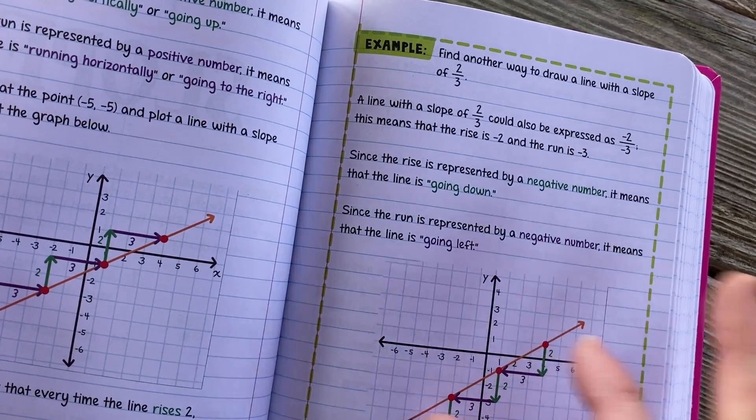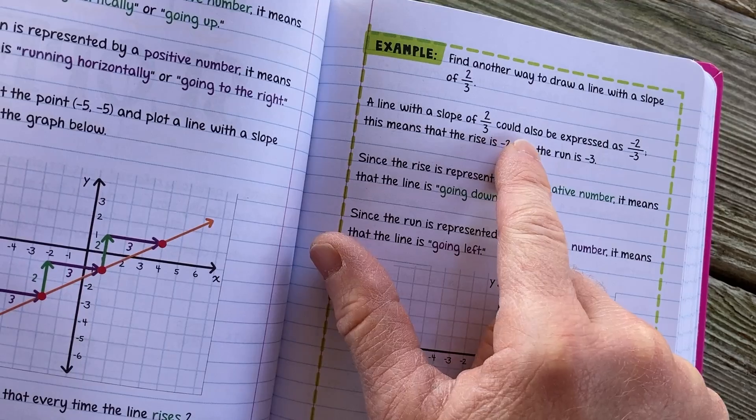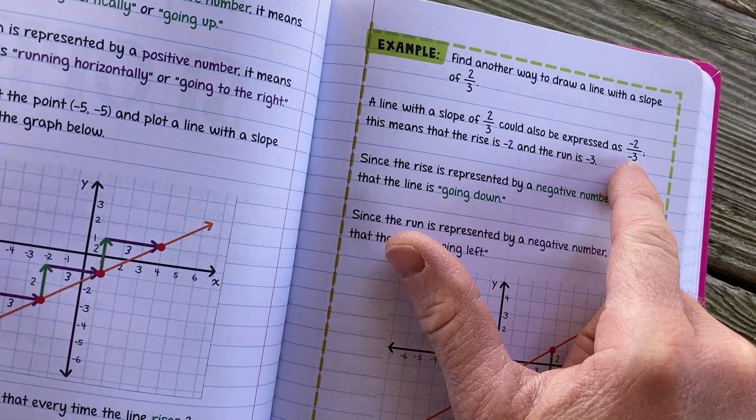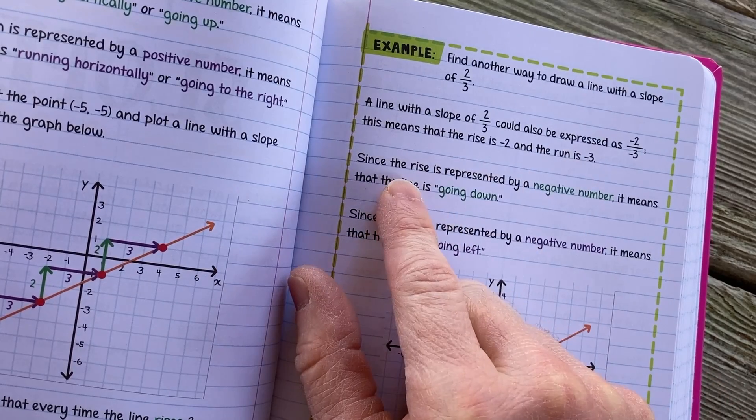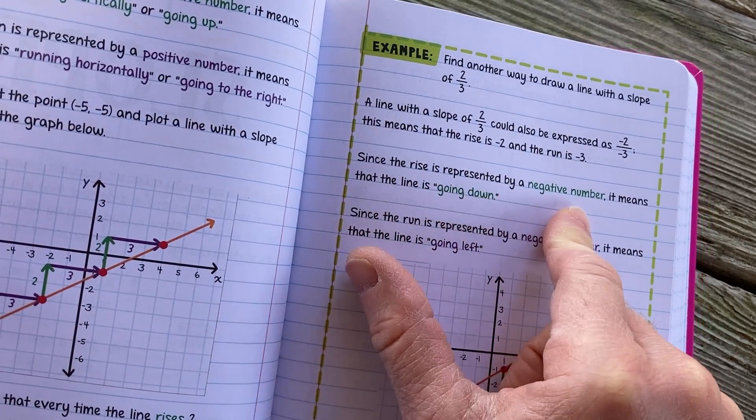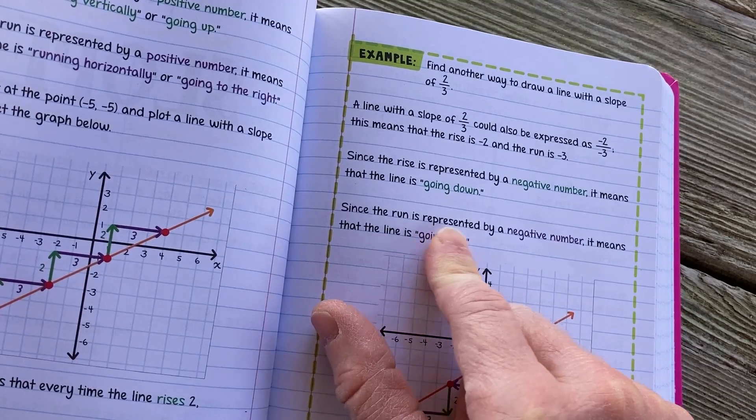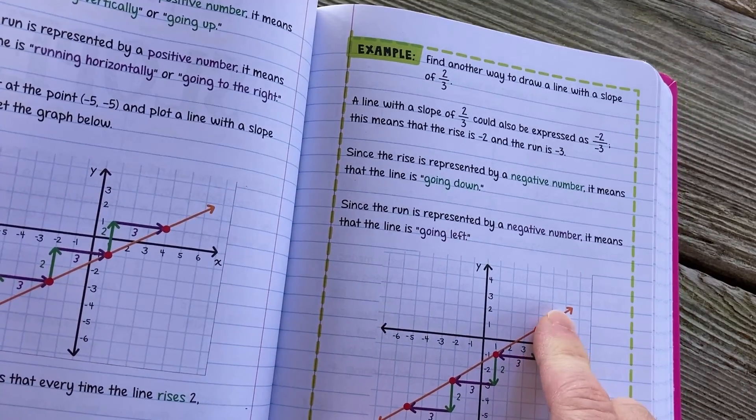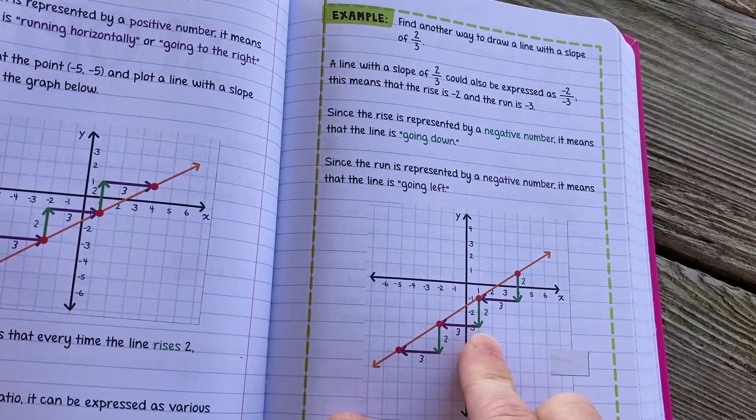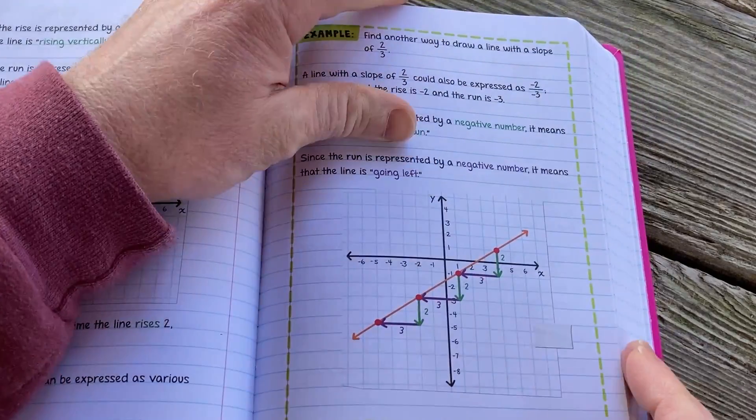Find another way to draw a line with a slope of two-thirds. So here it says a line with the slope of two-thirds could also be expressed as negative two over negative three. This means that the rise is negative two and the run is negative three. Since the rise is represented by a negative number, it means that the line is going down. Since the run is represented by a negative number, it means that the line is going left. So you go down two, left three, down two, left three, down two, left three. Same thing. And you get the same line.